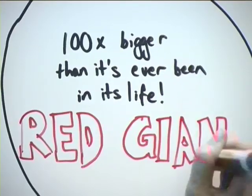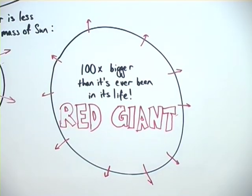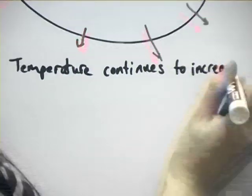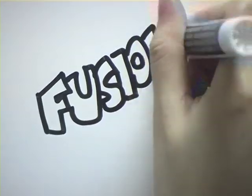While the outer layers of the red giant continue to expand, the core is still contracting, so the temperature continues to increase. The temperature gets high enough for helium fusion to begin, so that an even heavier element, carbon, forms.